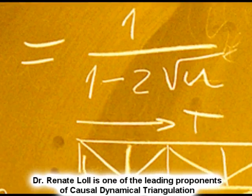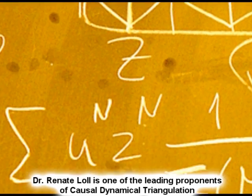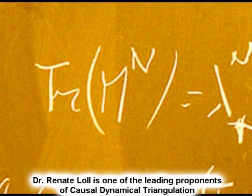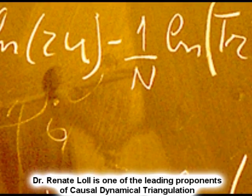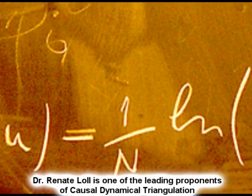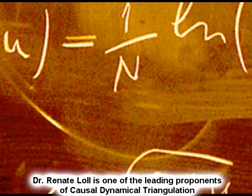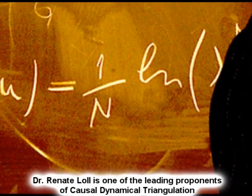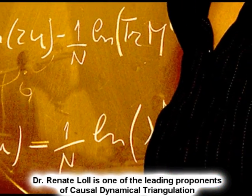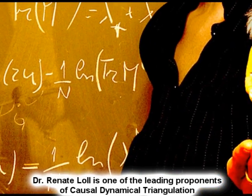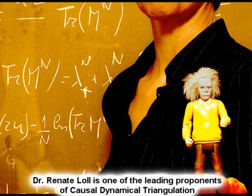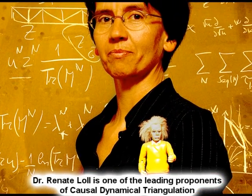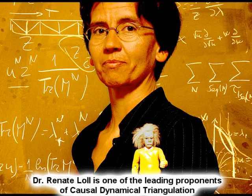A third contender for the theory of everything is called causal dynamical triangulations. CDT uses a pentachoron to break up space into triangular sections, and then employing causality allows us to evolve the proper dimensions of the macroscopic universe. CDT employs a modified quantum Regge calculus in conjunction with a triangulation process.